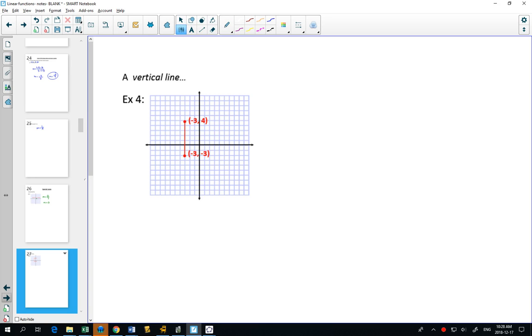A vertical line. Well, now I have a rise of 7 and a run of 0. So when I go to write my slope, my rise is 7, my run is 0. What is this equal to? This is not possible. Go type this into your calculator. Your calculator gets angry.